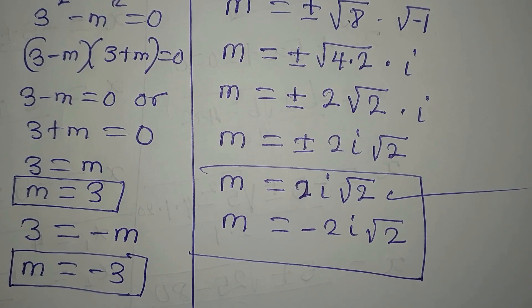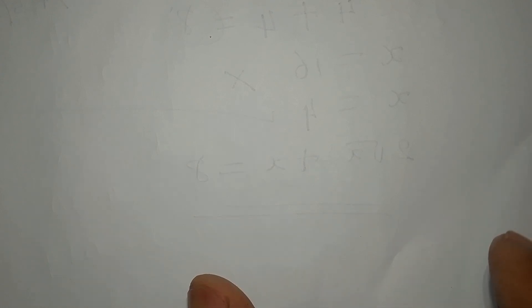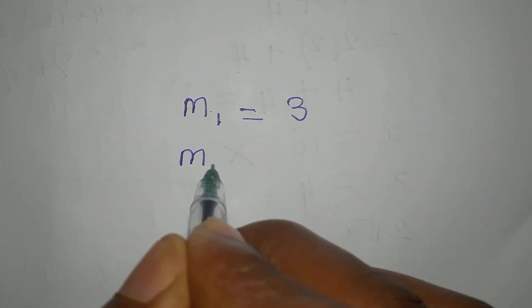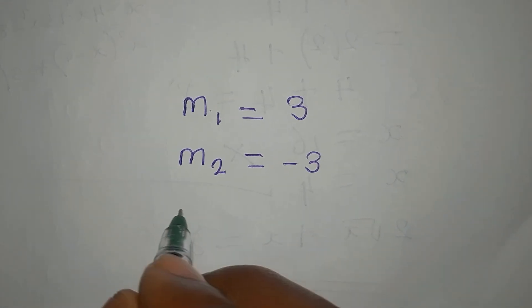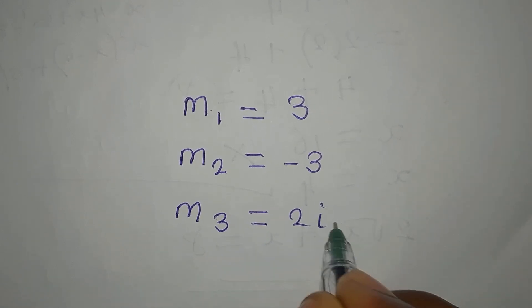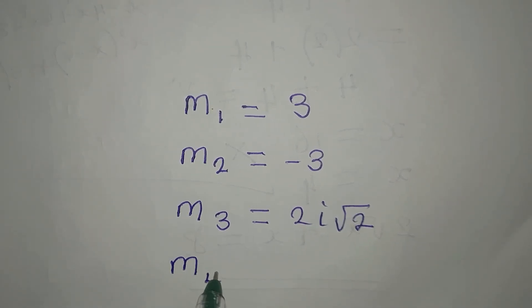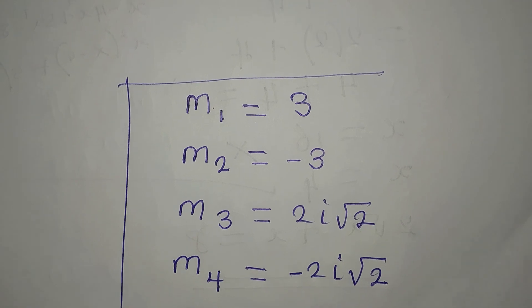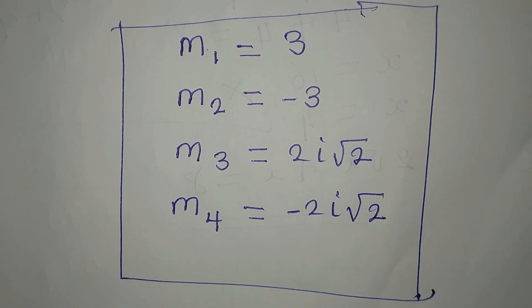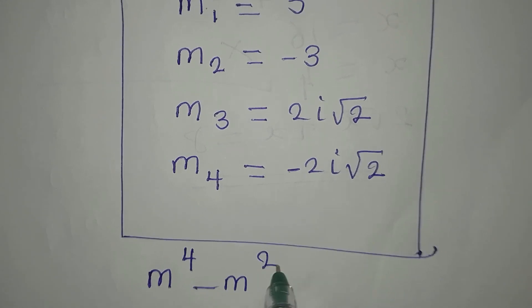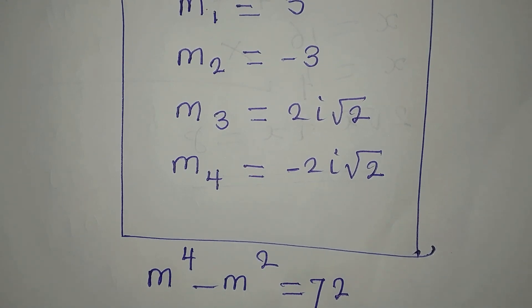Bringing the four solutions together: m₁ equals 3, m₂ equals negative 3, m₃ equals 2i root 2, and m₄ equals negative 2i root 2. These are the four solutions to the equation m to the power of 4 minus m to the power of 2 equals 72. You can substitute each value in to confirm it yourself.